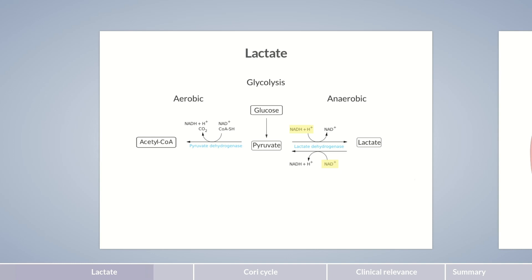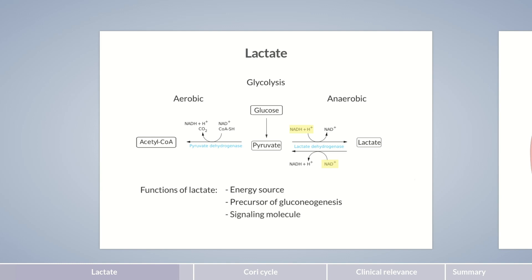Lactate was long considered mainly as an end product of anaerobic metabolism, which needed to be broken down rapidly to prevent hyperacidity. Currently, it's generally assumed that this perspective falls short. Lactate can be used as a source of energy by the body. It's also a precursor of gluconeogenesis. Finally, it appears to take on the role of a signaling molecule, in which it impacts the expression of various genes, thereby regulating lipolysis. To highlight its role as a signaling molecule, it's occasionally referred to as a lactormone.